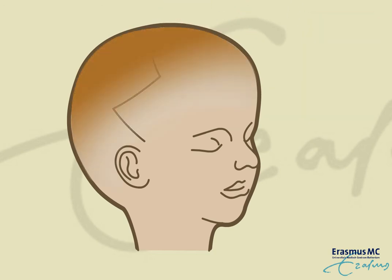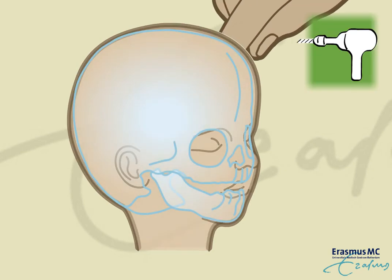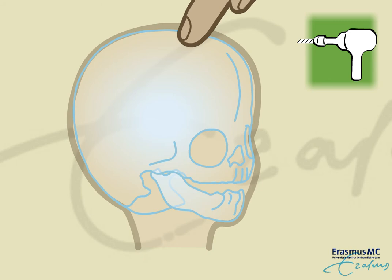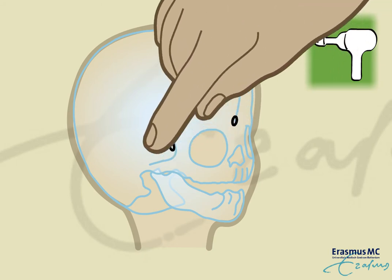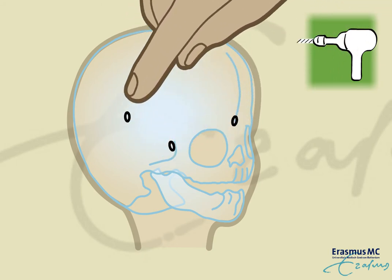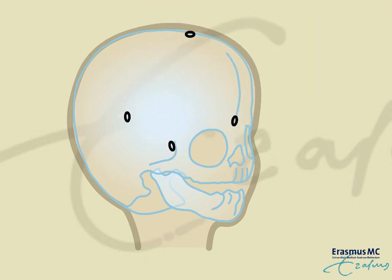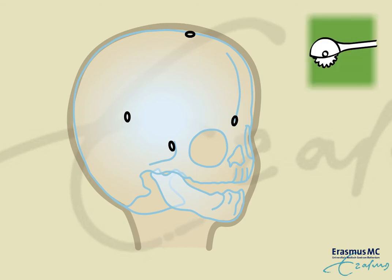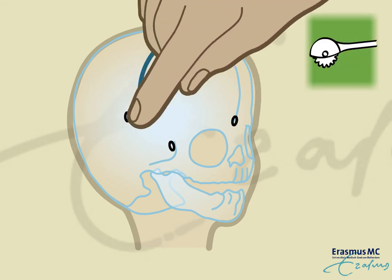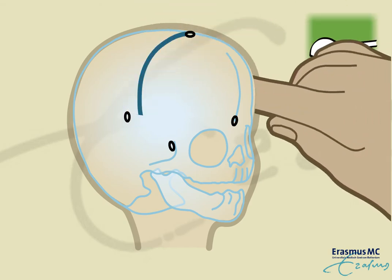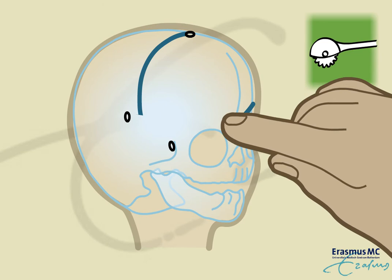The zigzag pattern is made for better coverage of the scar with hair. The surgeon makes a few burring holes to detach the bone from the meninges underneath. The bones of the forehead are then removed.